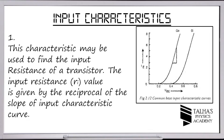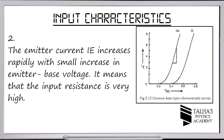Several points can be derived from the input characteristics. Point 1: this characteristic can be used to find the input resistance RI, which is the reciprocal of the slope of the input characteristic curve. Point 2: the emitter current IE increases rapidly with a small increase in emitter-base voltage, which means the input resistance is very low.